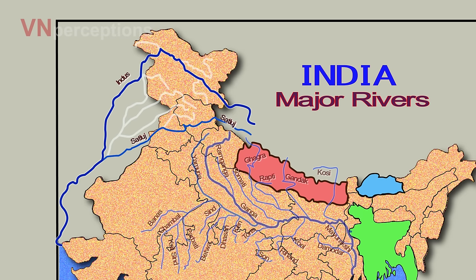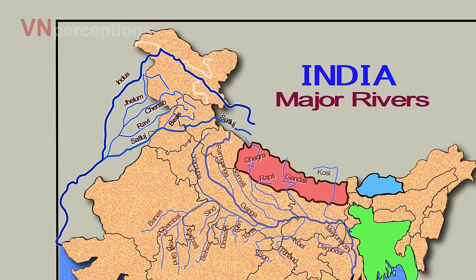The tributaries of Indus are Jhelum, Chenab, Ravi, and Beas. In the northern part, the tributaries are Shyok, Gilgit and Zanskar.